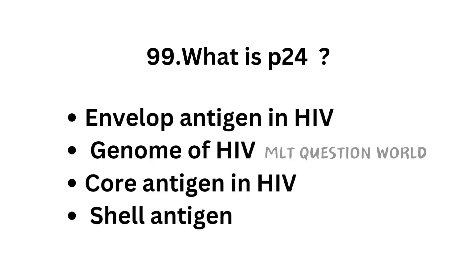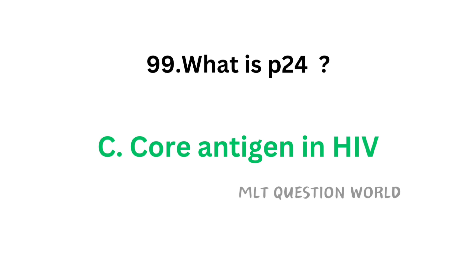Question number 99. What is P24? Option A: Enveloped antigen in HIV, Option B: Genome of HIV, Option C: Core antigen in HIV, Option D: Shell antigen. The correct answer is Option C — core antigen in HIV. P24 is the core antigen in HIV.